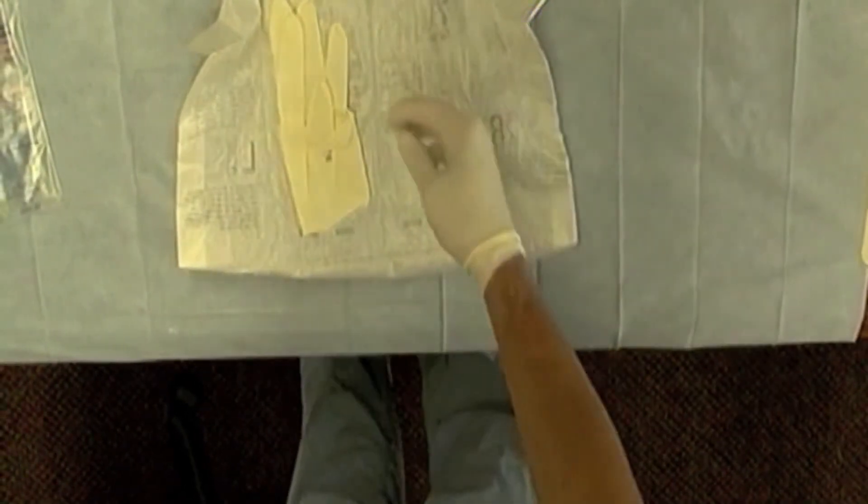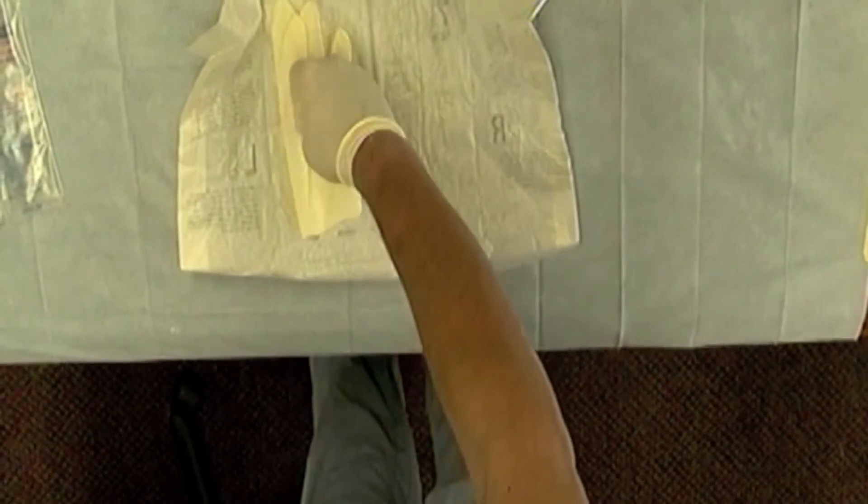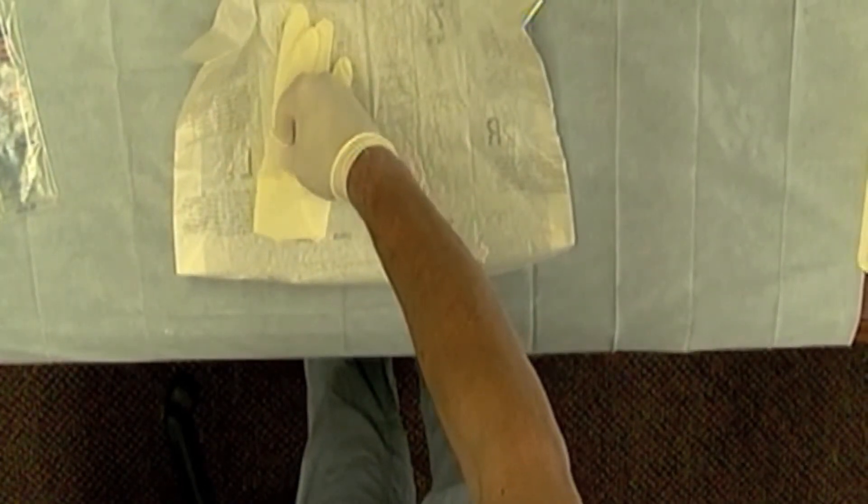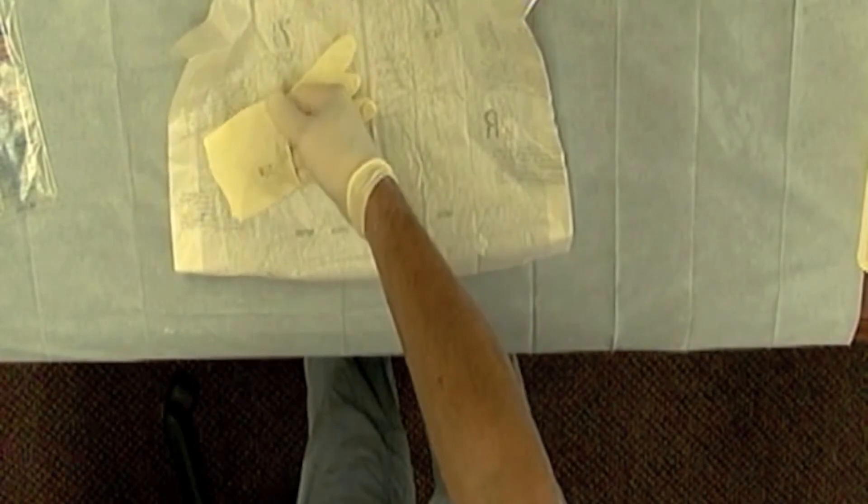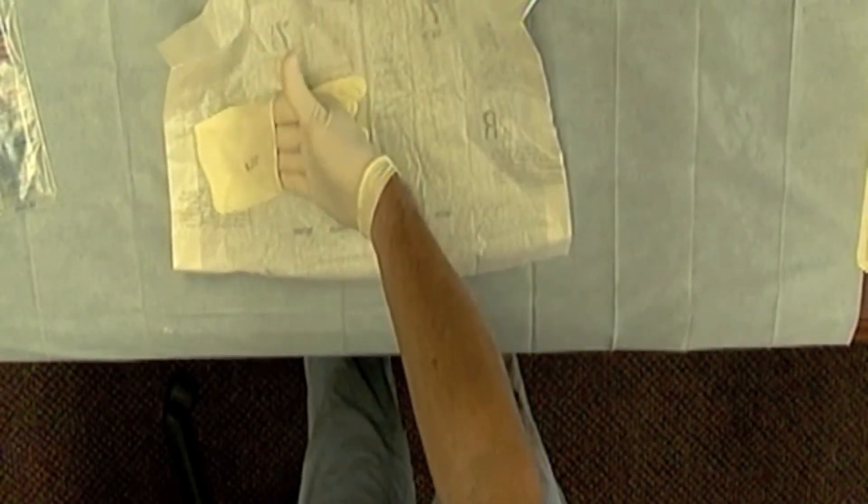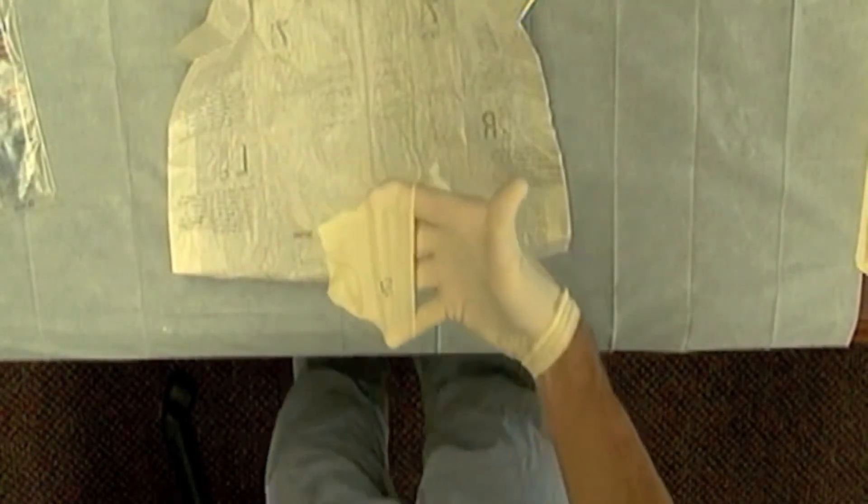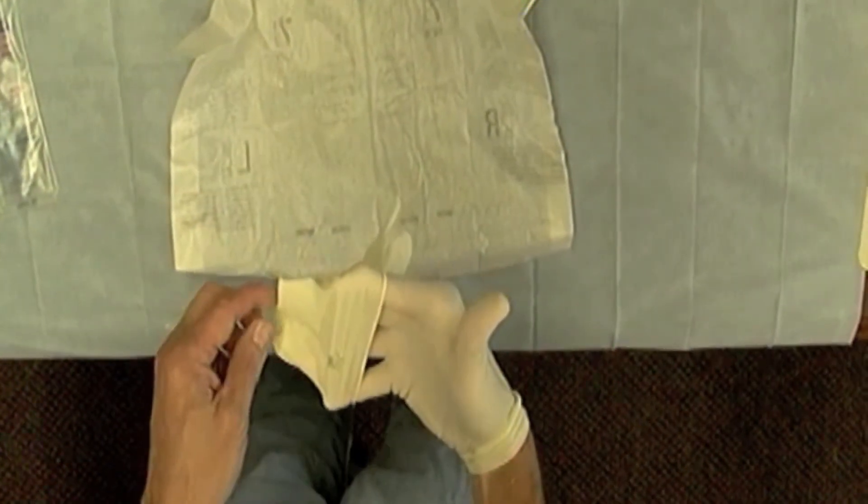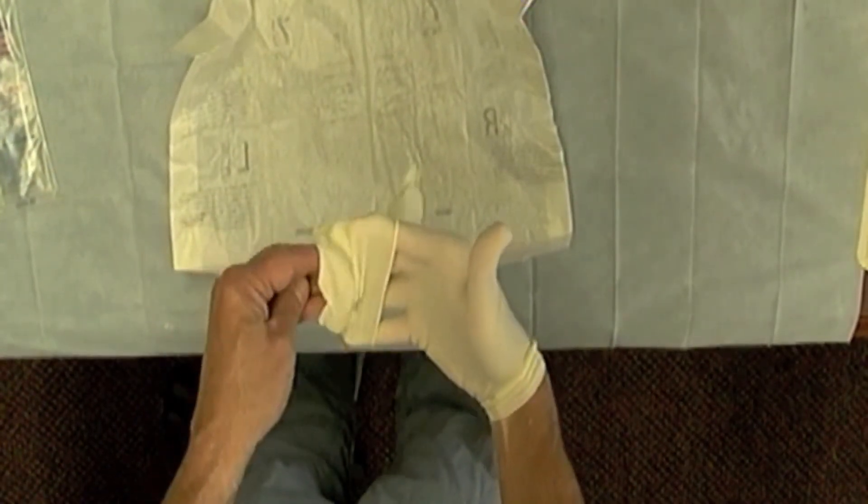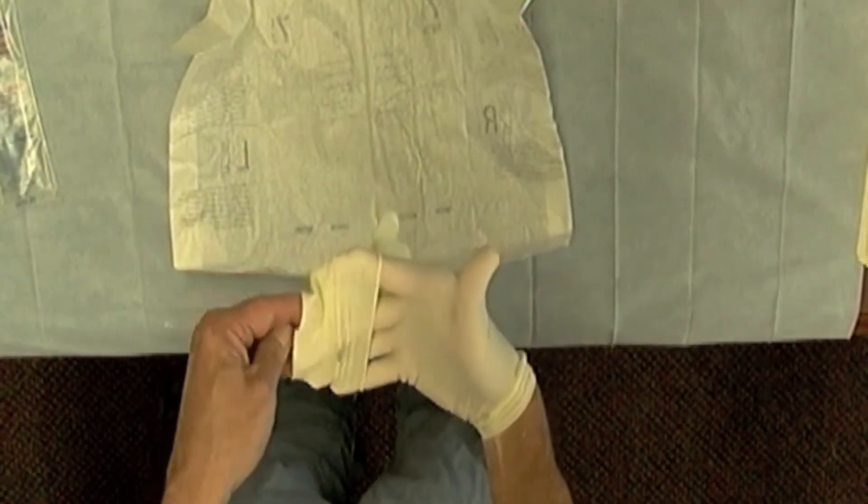Now I need to grasp the left glove, and I'm grasping it on the inside aspect of the cuff, which is the sterile portion, making sure that I spread this liberally in order to get my left hand into the glove.